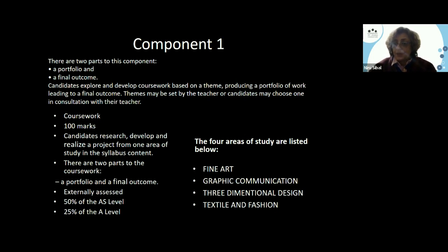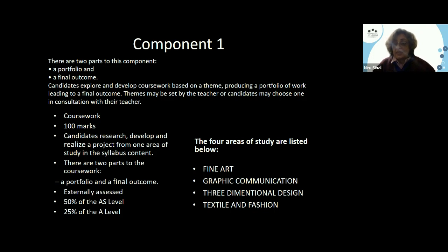I'll be talking about component one. There are three components — component one is coursework, component two is external exam, and component three Mr. Ghosh will be talking about. In component one there are two parts: a portfolio and a final outcome. Within the portfolio you will have all that we spoke about, and it will lead to a final outcome. You don't have to create too many outcomes — one is enough, or you could have a series that works toward one outcome. Candidates explore and develop coursework based on a theme, producing a portfolio of work leading to a final outcome. Themes may be set by the teacher or candidates may choose one in consultation with their teacher.